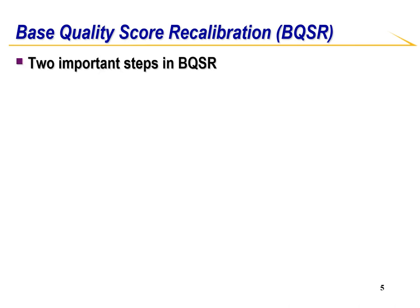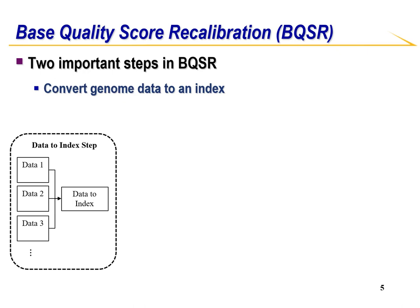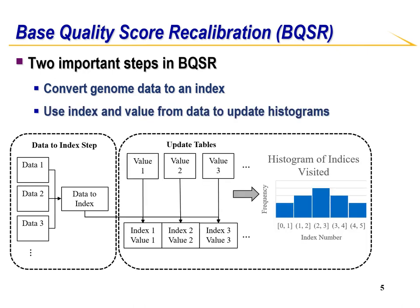There are two main steps in BQSR. The first step is to convert the genome data to an index for the BQSR table. The second step is to update the BQSR table with a value.